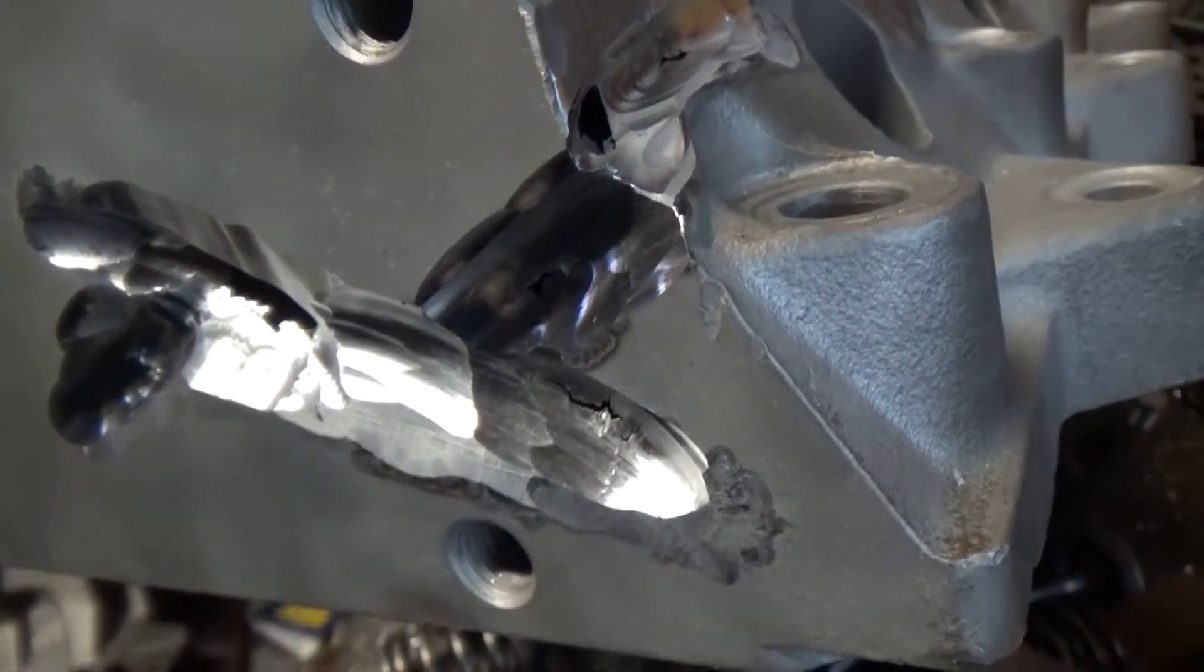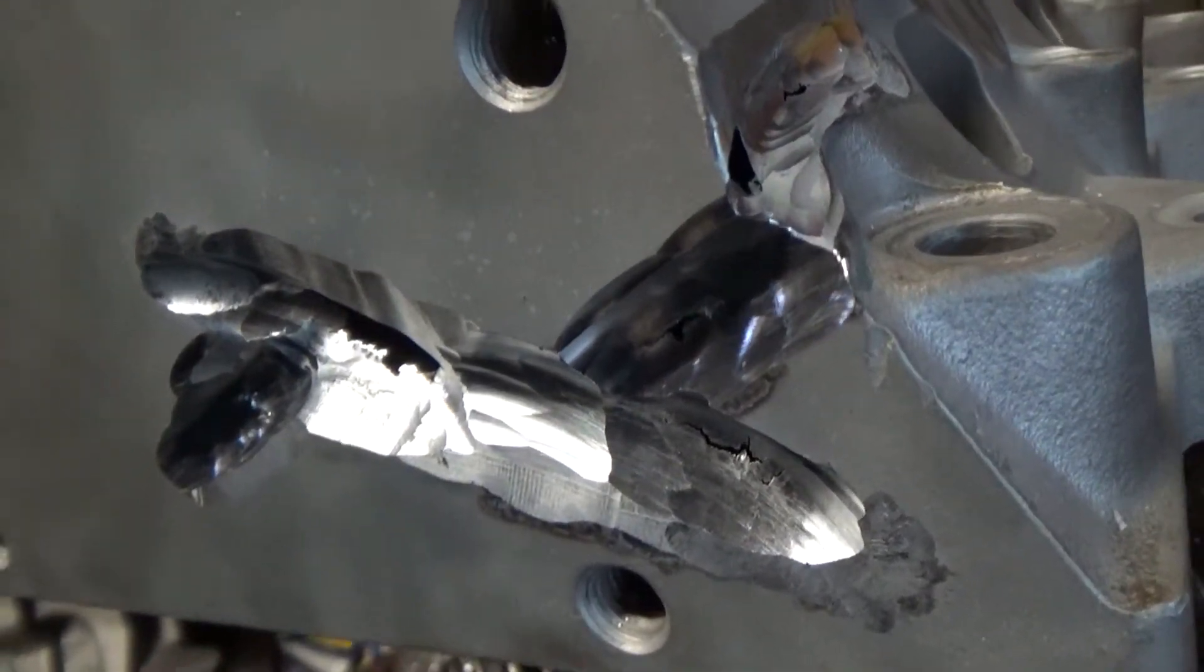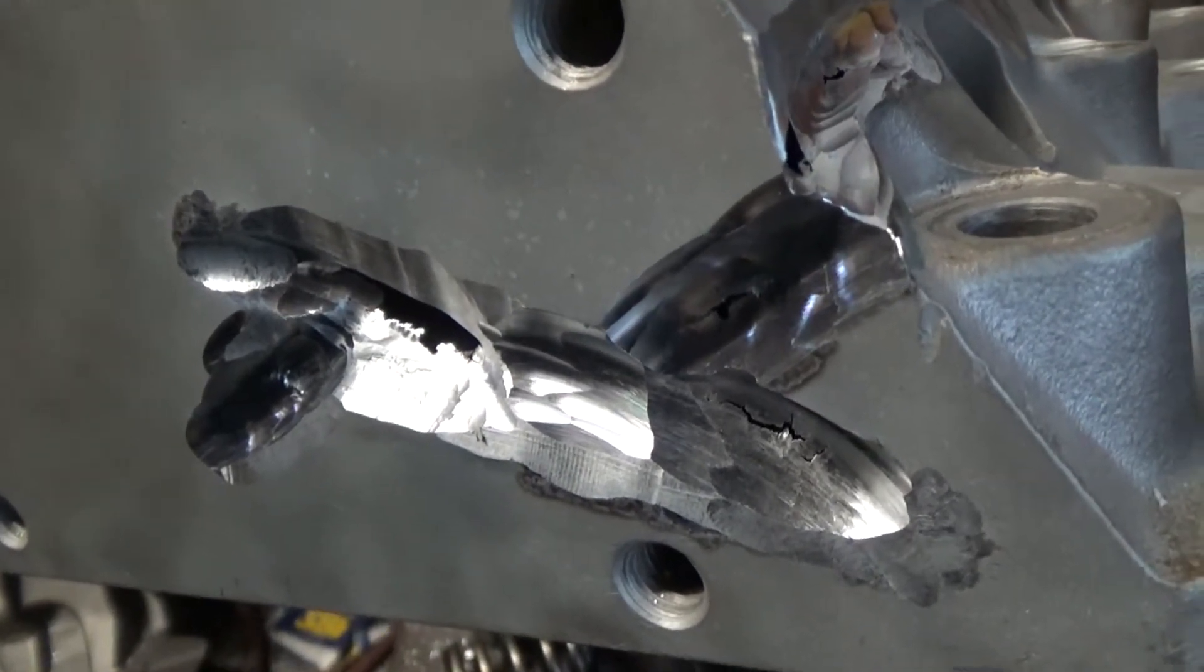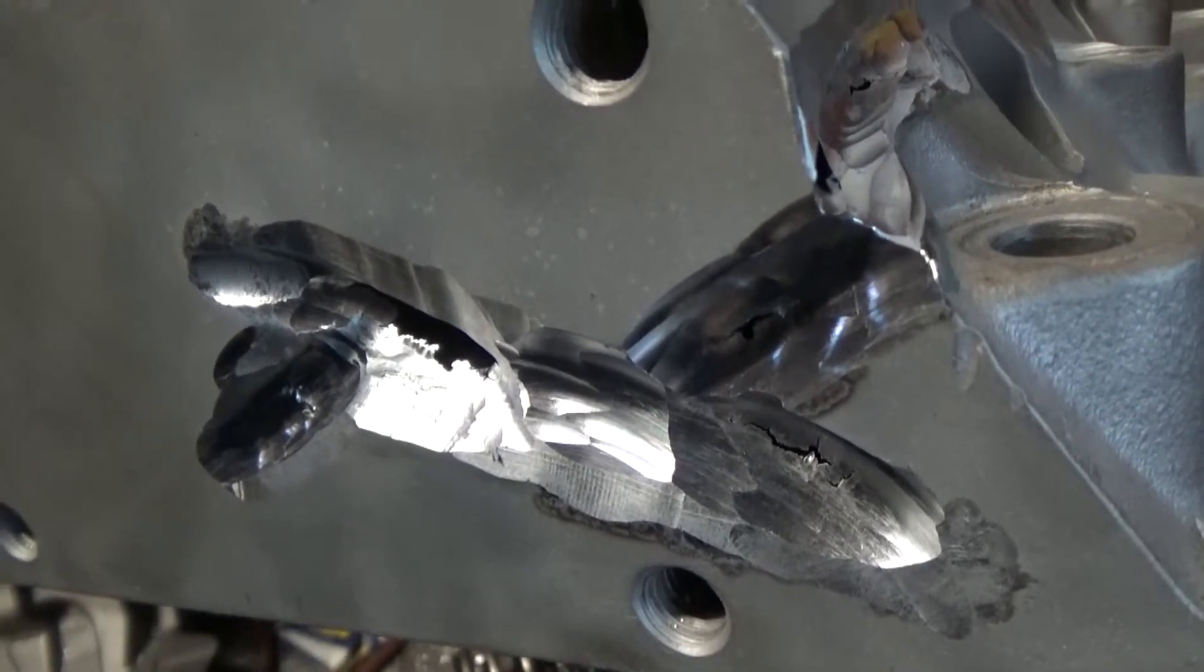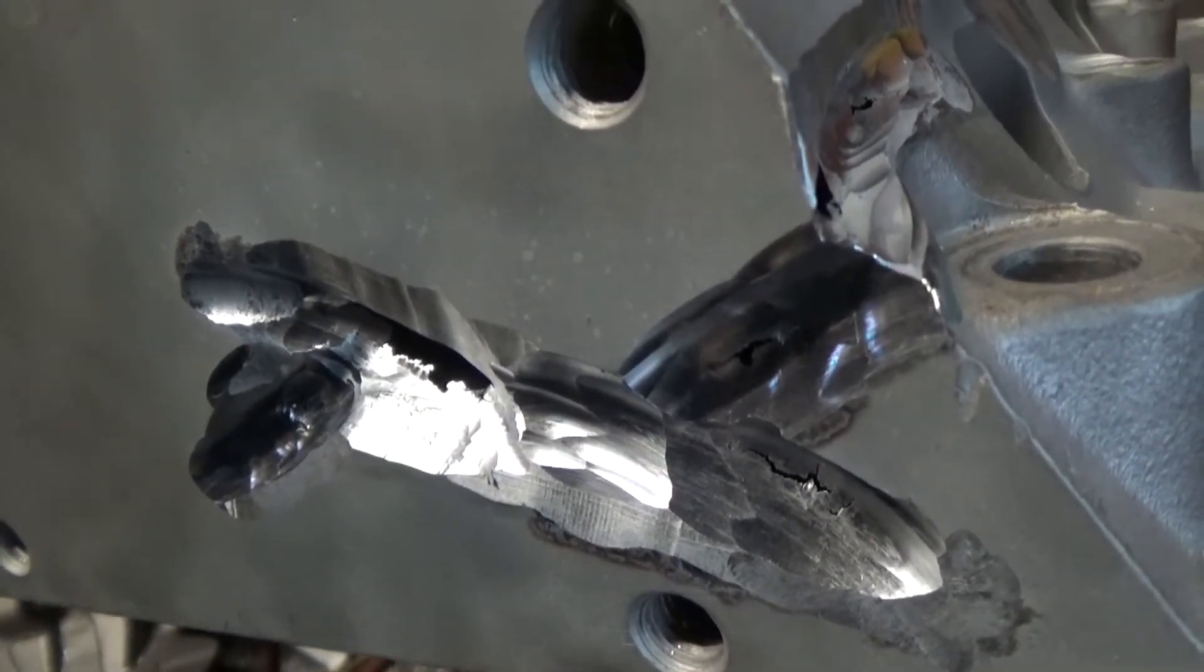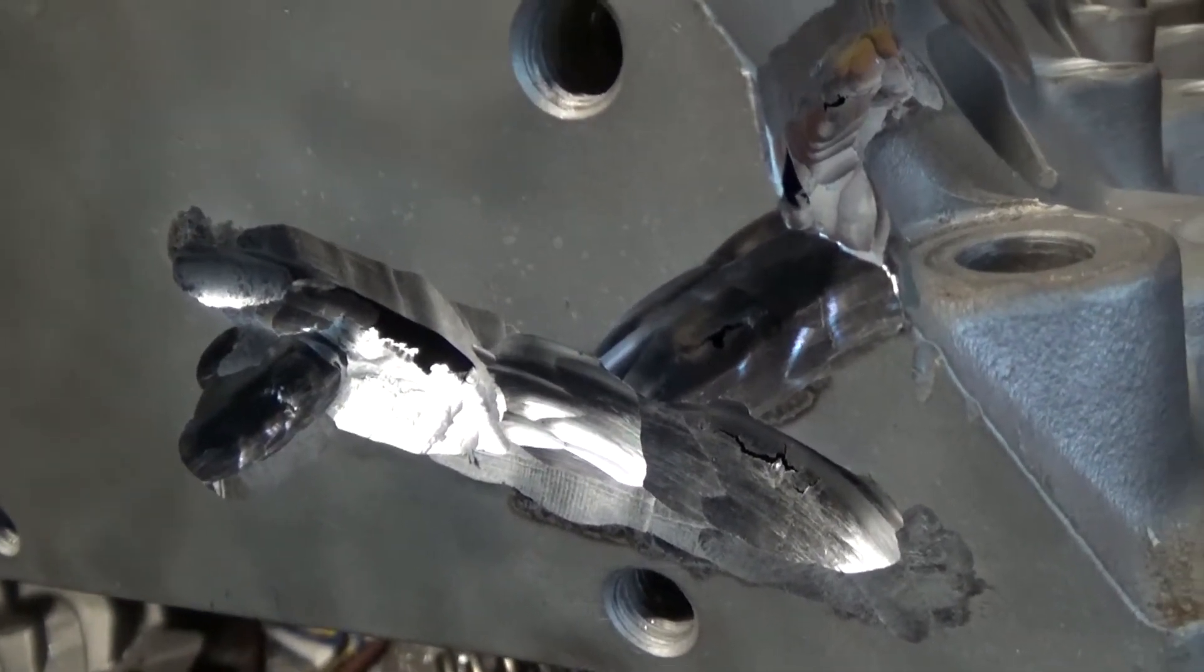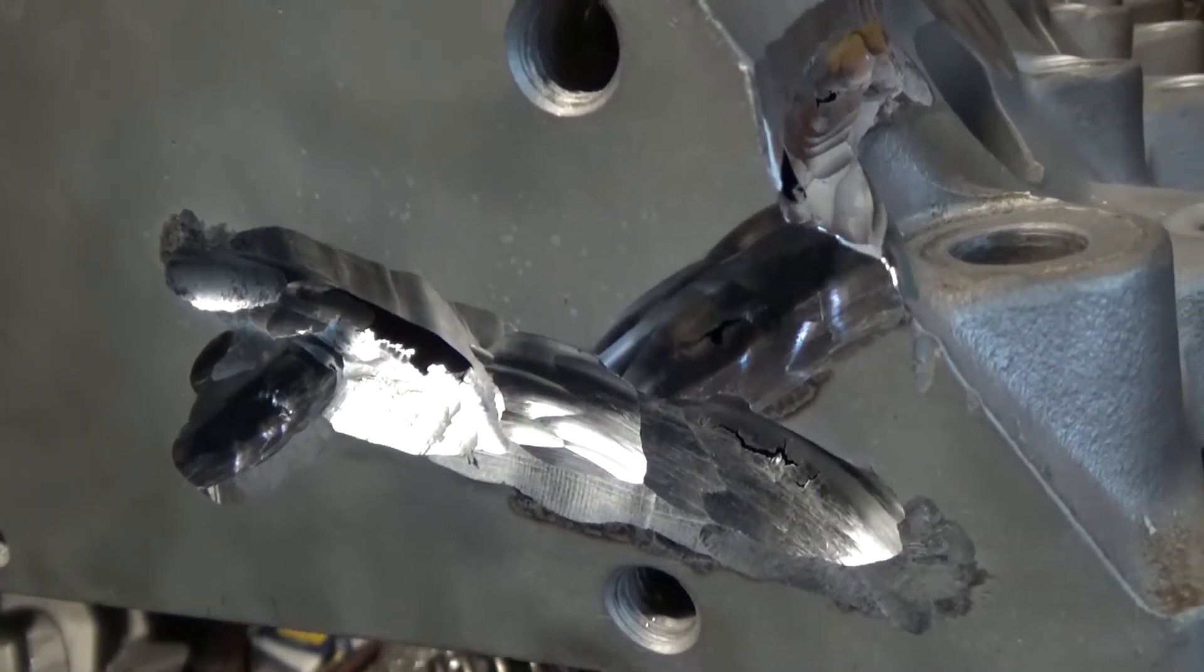So, next step is to preheat. We'll get a good heat soak on this, and then go ahead and do the welding. Then we'll post-cool it, and pressure check. Make sure we've got everything the way we want it, and then we can proceed on with the rest of the welding.